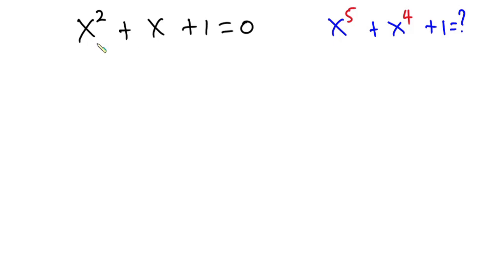Hello everyone, in this video we have this nice problem. We have x to the second power plus x plus 1 is equal to 0, and we have to find the value of x to the fifth power plus x to the fourth power plus 1.